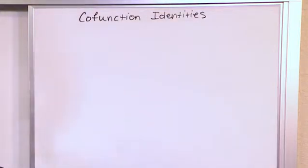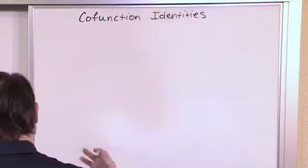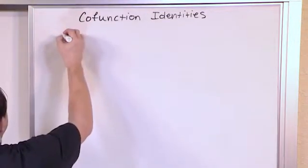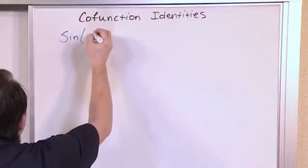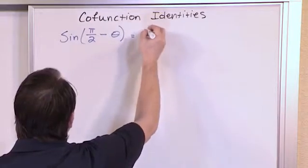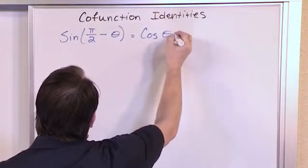So the cofunction identities. Let me write them down and you're going to look at these and say, wow, where did these come from? But let me get them down on the board and then I'll explain kind of where they come from. What it's saying is the sine of pi over 2 minus some angle theta is equal to the cosine of theta.